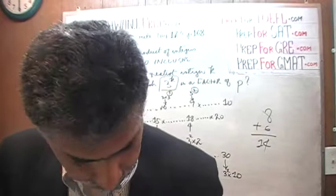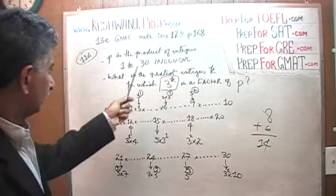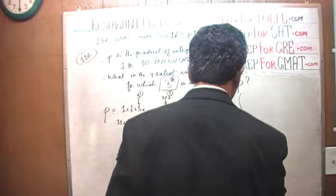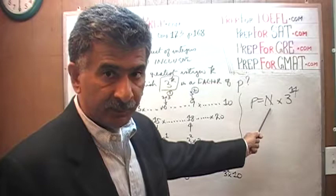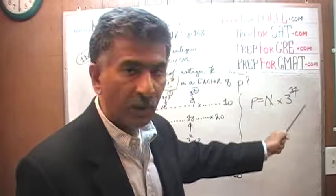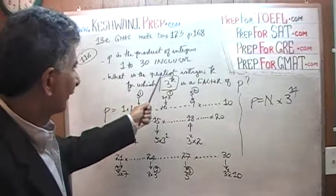We are done — that's your answer. The greatest integer K for which 3 raised to K is a factor of P, where P is the product of integers 1 through 30, is 14. P can also be written as some integer N times 3 raised to 14 — that is the greatest power. Of course it can also be written with 3 raised to 13 or 12, but the greatest value of K is 14.